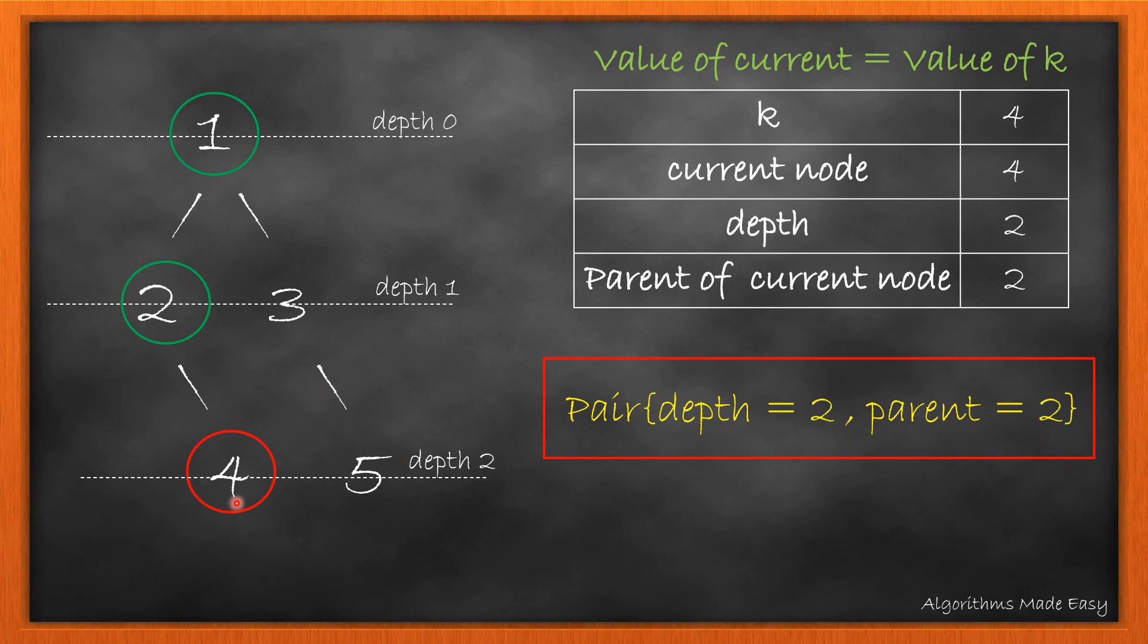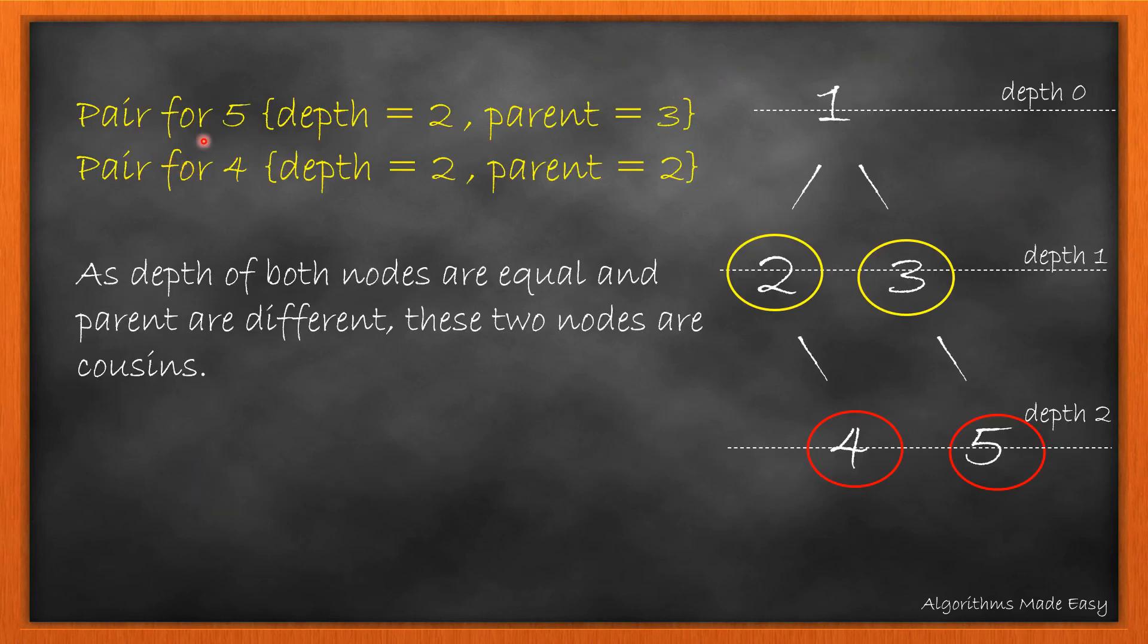Similarly when we traverse the tree for node 4, we find its depth and parent pair. As we now have the depth and parent pair for both nodes, we can see that their depths are equal and parents are different. So, this satisfies the condition for being cousins.